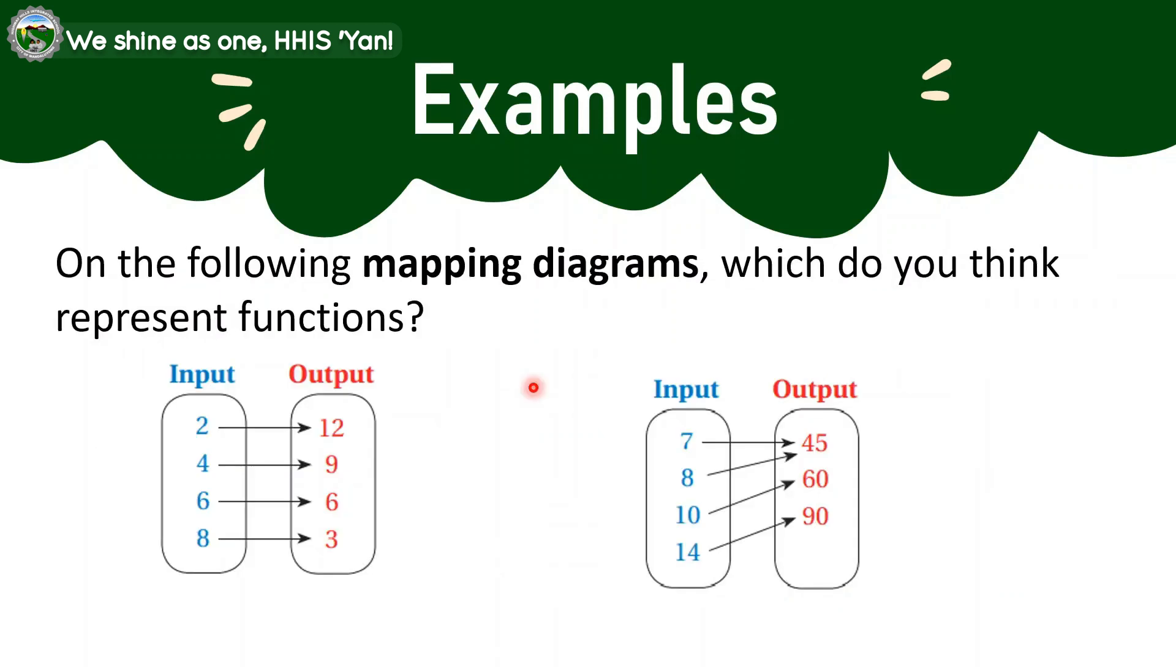So let us now proceed to the examples when we were given mapping diagrams. Let us also identify in here which are functions or not functions. First example, we have in here 2 map to 12, 4,9, 6 to 6, and 8 to 3. So this is an example of a function. And then, the relationship depicted by this example is a one-to-one function. Since for every element in our domain, that is matched exactly to an element in our range.